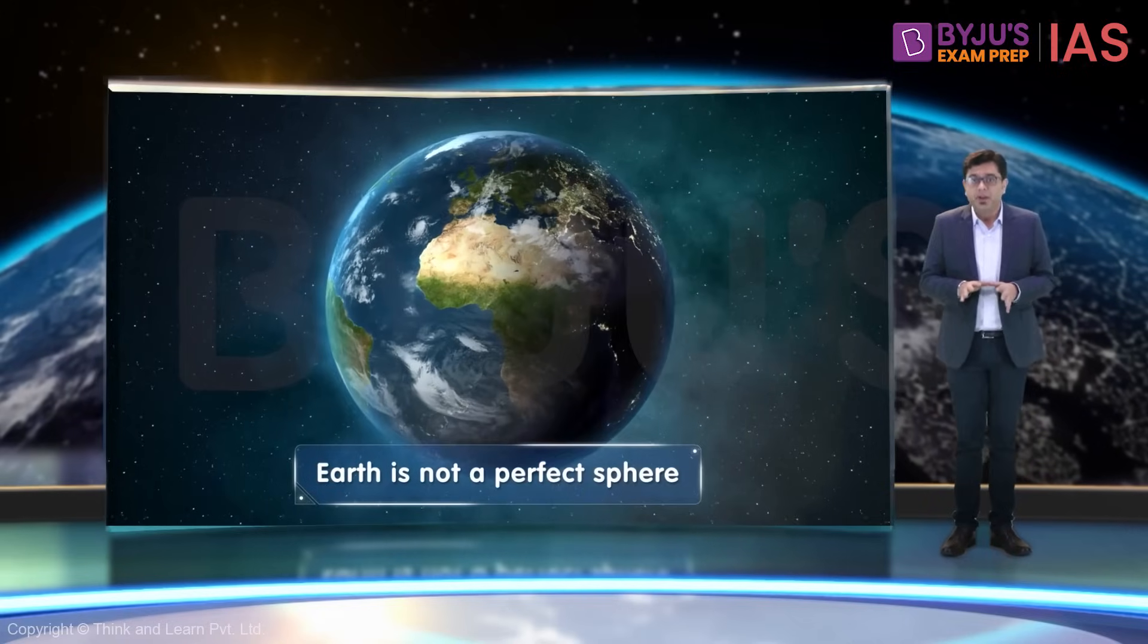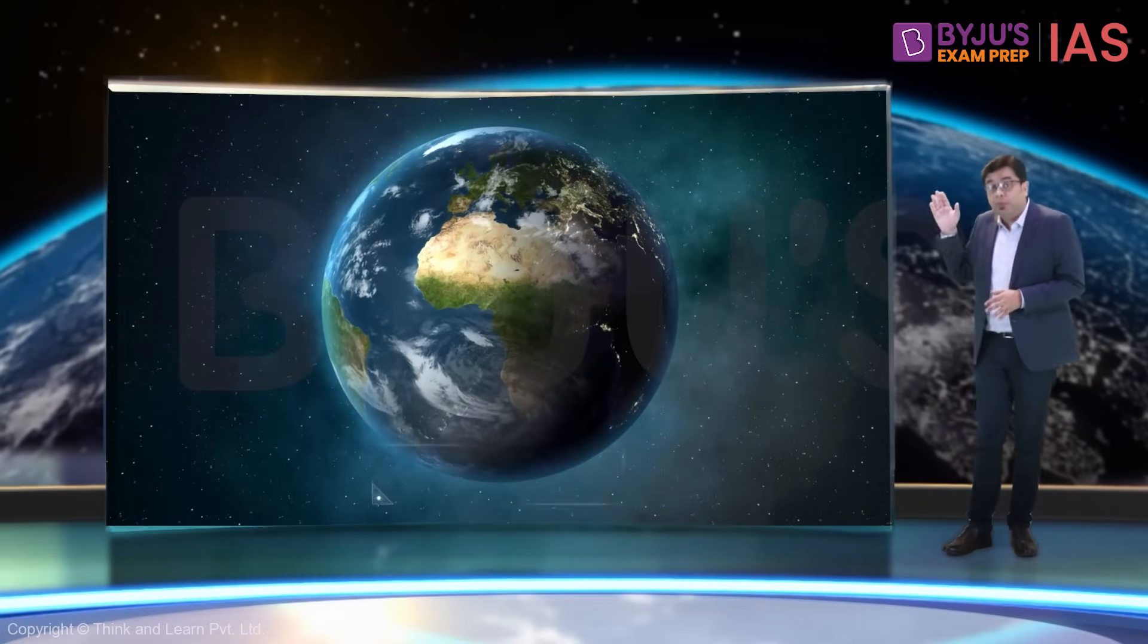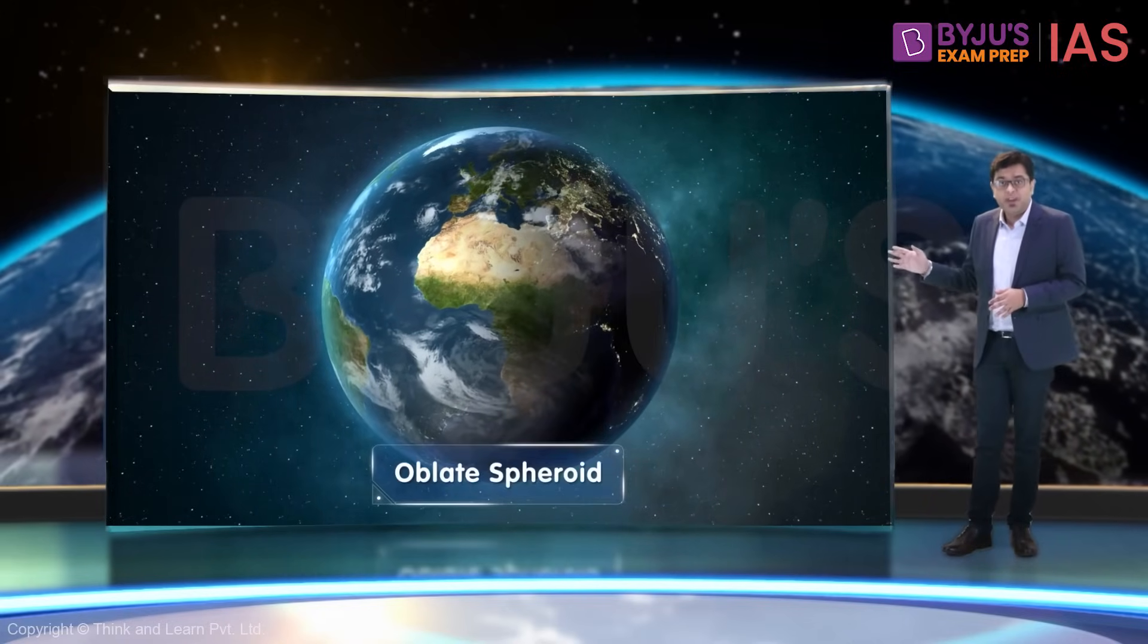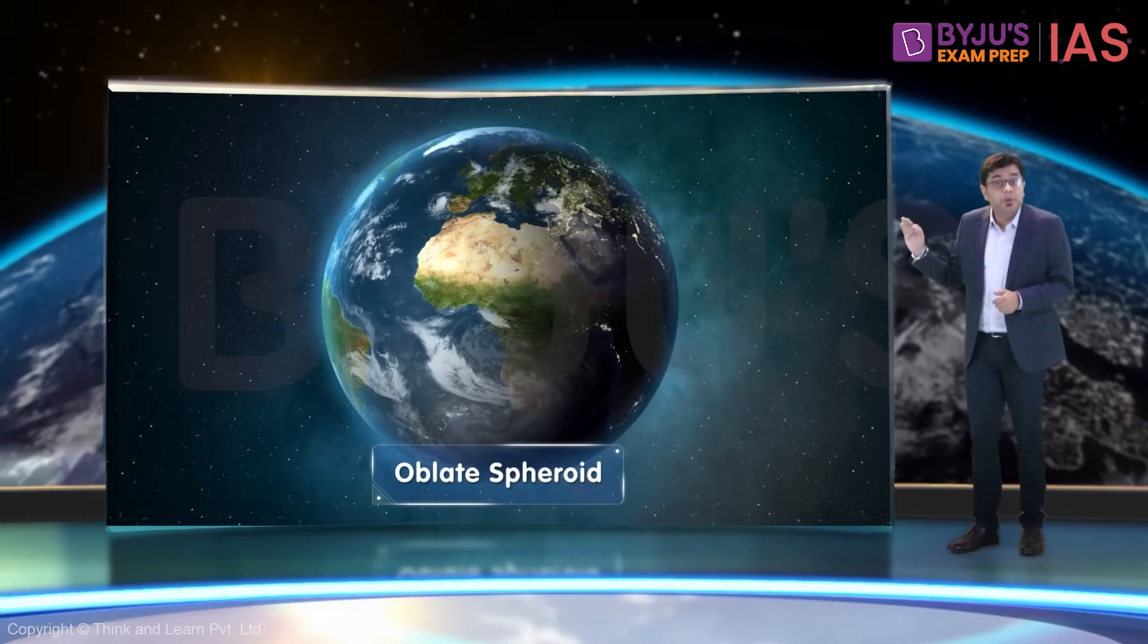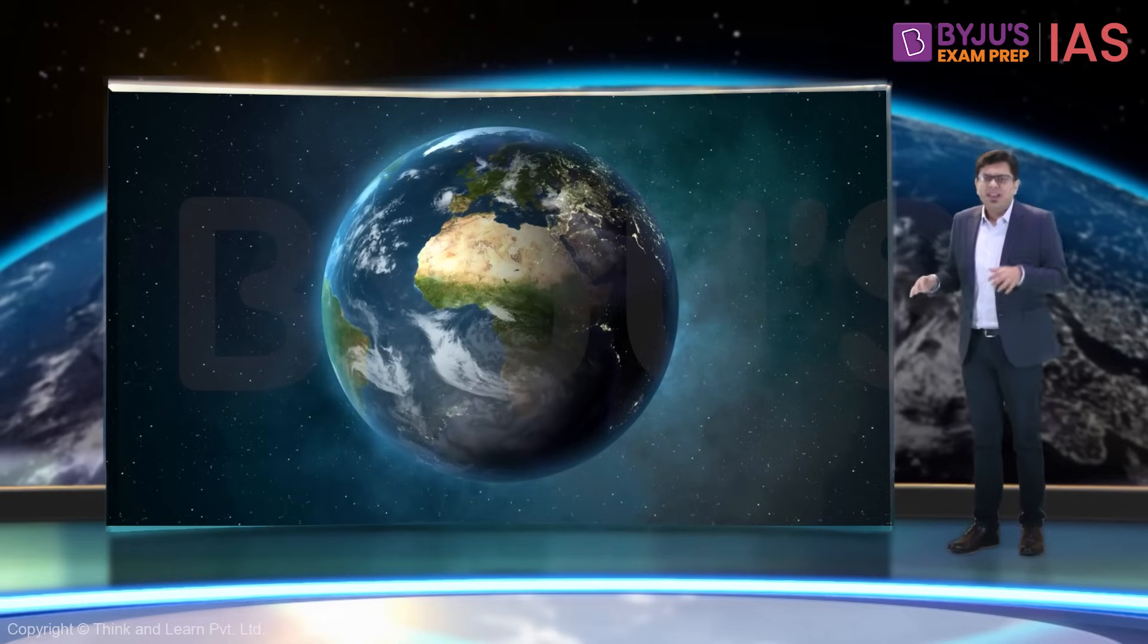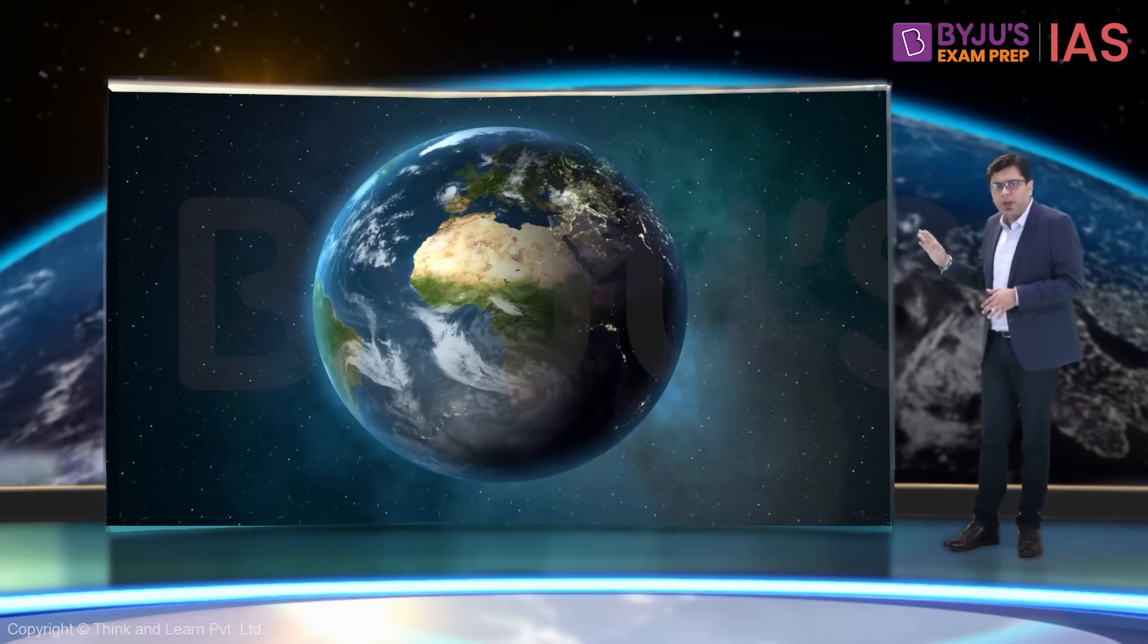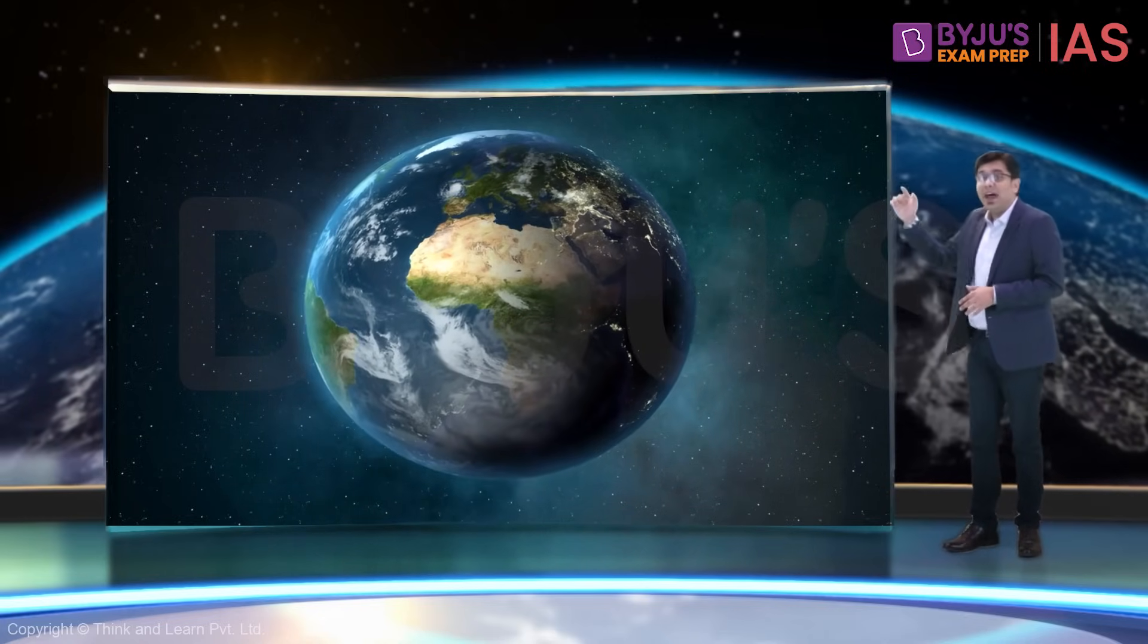But the Earth is not a perfect sphere. Earth is an oblate spheroid. This means it is spherical in shape, but not perfectly round. It is slightly bulged at equator and is flat at the poles.